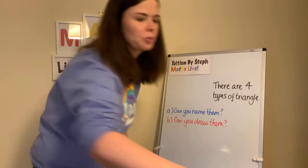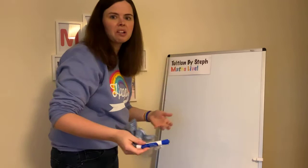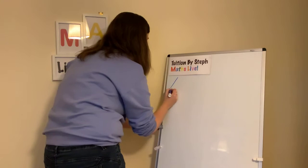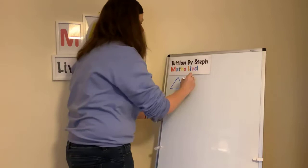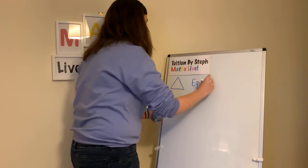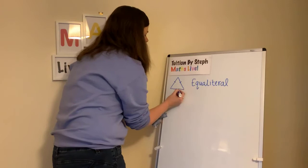So there are four different types of triangle. The first type is what you would think of as looking like the traditional triangle. I'm drawing it to make sure all the sides look the same length. And that is an equilateral triangle — all the sides are the same length.